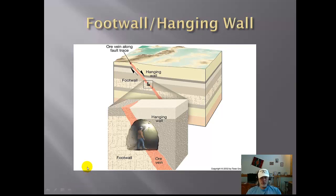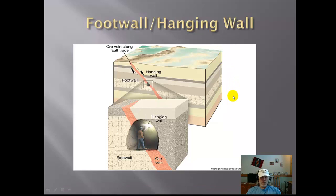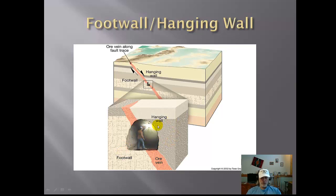The other part we need to talk about when we discuss faults and mountain building is what's called the foot wall and the hanging wall. This goes back to the mining days. The miners working in the ore vein — ore being a rock mined for profit — would be standing on the floor, which was called the foot wall. The hanging wall was where the miner actually hung his lamp so he could use a pick and mine the ore vein. These terms are still with us today: the foot wall and the hanging wall.